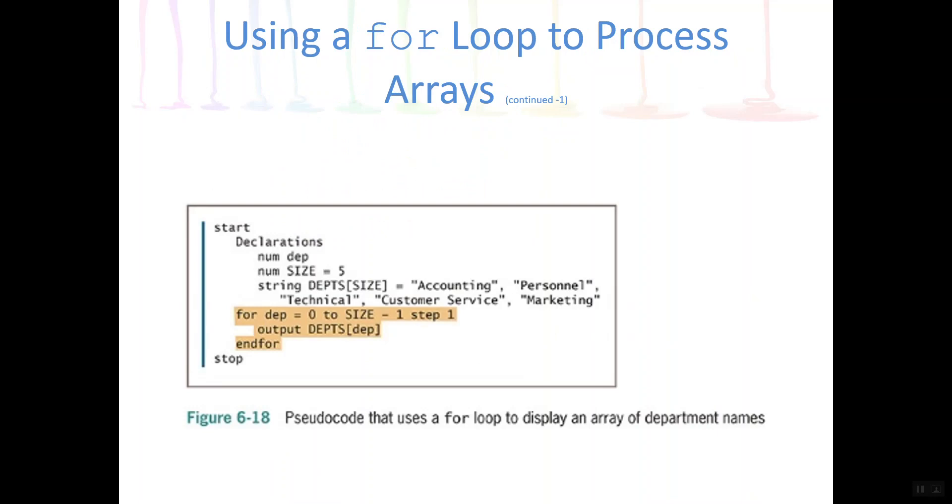So here we have another example. Instead of numbers, we have an array of strings. So that's also possible. We called it departments, and apparently we're making it a constant, meaning that these values won't change. So you can certainly do that. You can create an array of constants. And instead of typing five, they used a constant five here, and that's fine too. I could have also just written five. Either way works. But we're creating an array of size five and initializing it to have the values accounting, personnel, technical, customer service, and marketing.